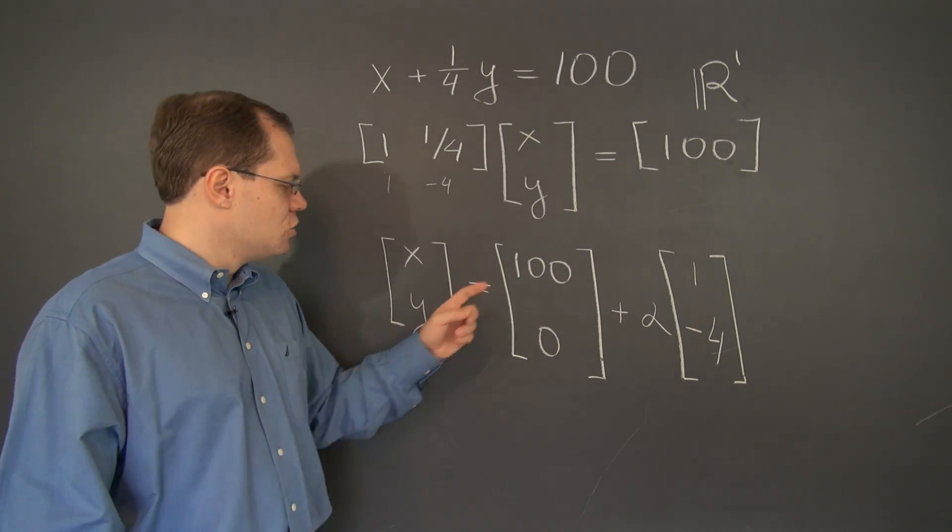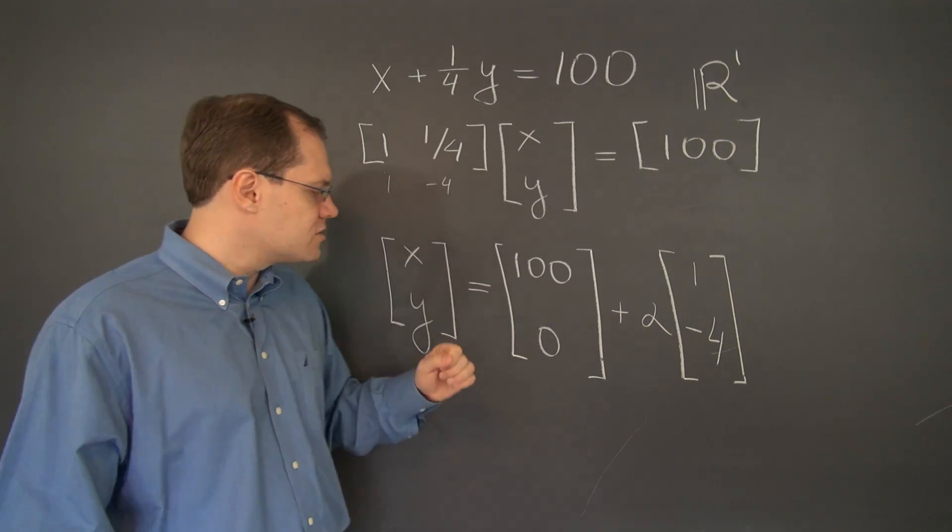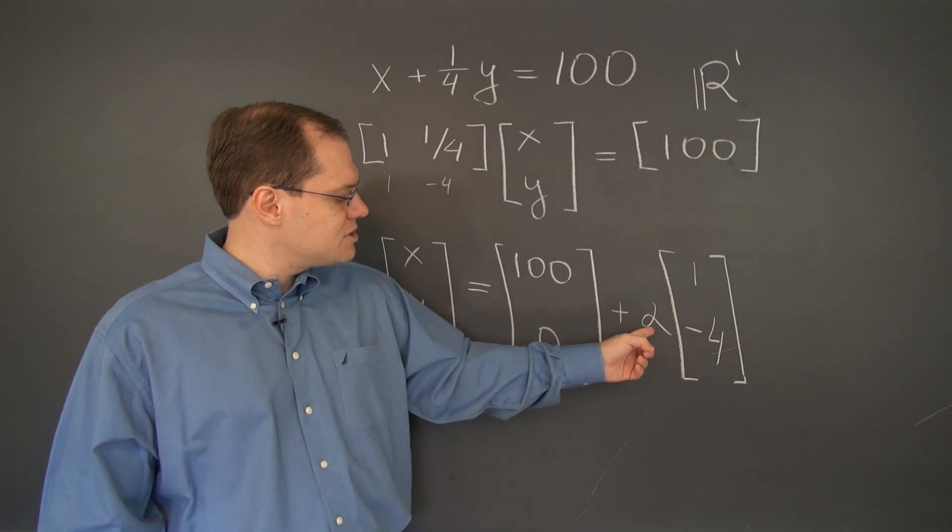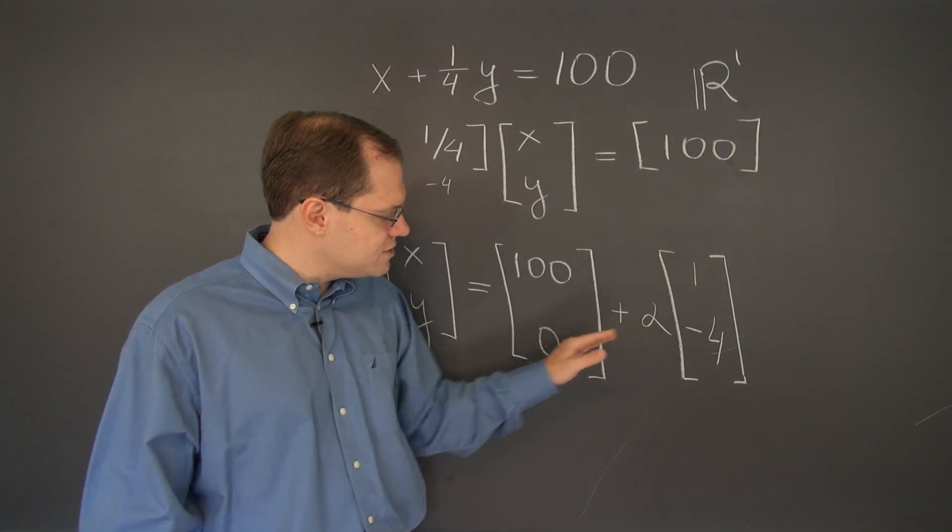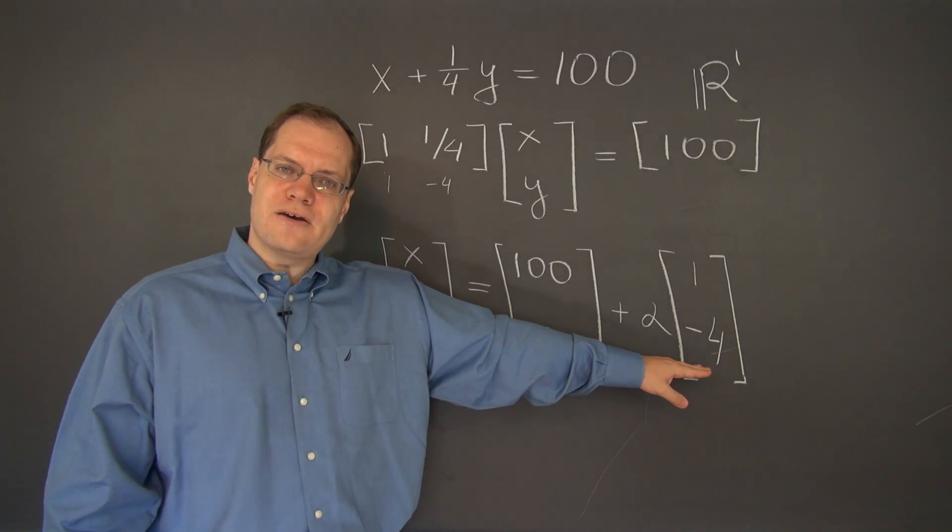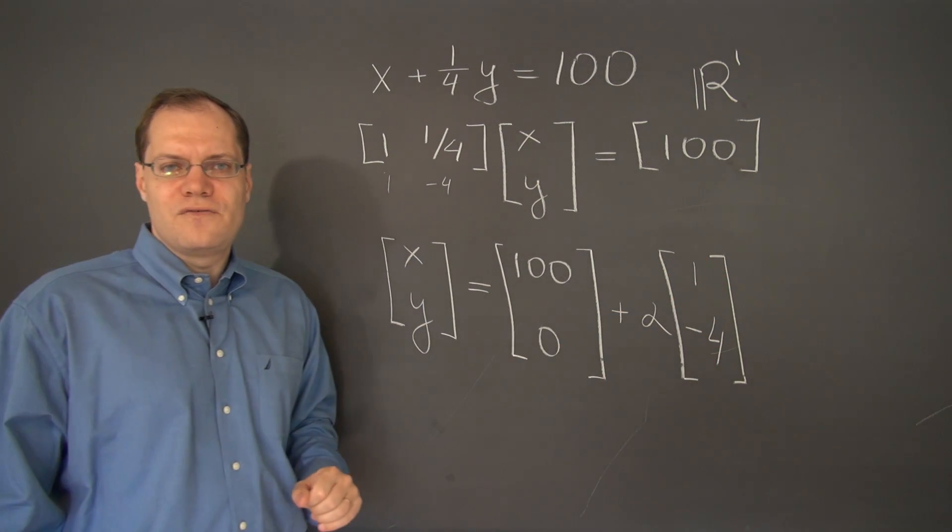What was another example that we mentioned? No dollars and 400 quarters. How would we get that solution? Well, we would take α equals minus 100. Then in the first entry, we have zero. And in the second entry, we have 400. So x equals zero, y equals 400.